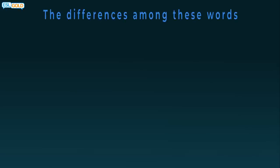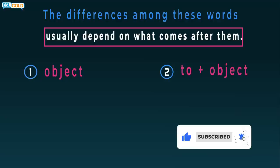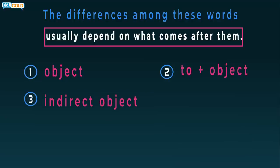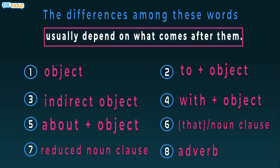The differences among these words usually depend on what comes after them: 1. Object, 2. To plus object, 3. Indirect object, 4. With plus object, 5. About plus object, 6. That noun clause, 7. Reduced noun clause, 8. Adverb.